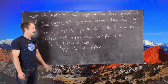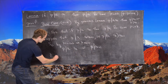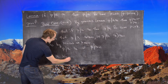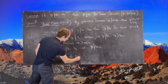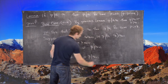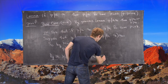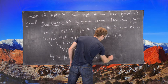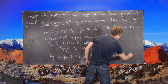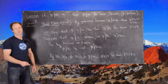Applying the induction hypothesis: if p divides a1·...·ak, then p divides ai for some i between 1 and k. Combined with the other case where p divides ak+1, we conclude that p divides ai for some i between 1 and k+1, completing the induction step.